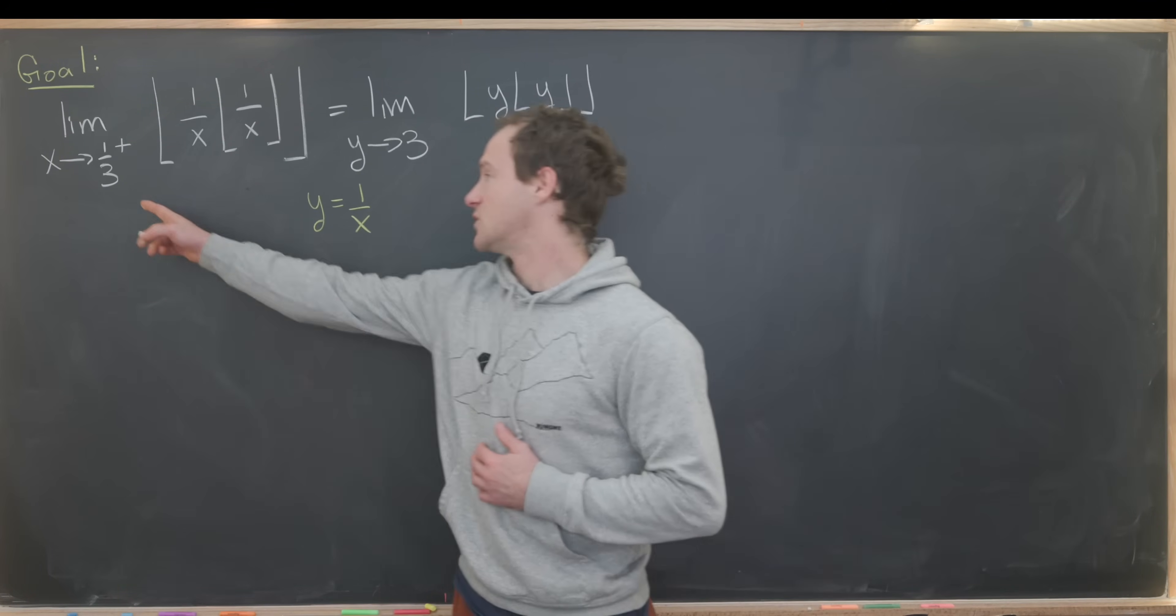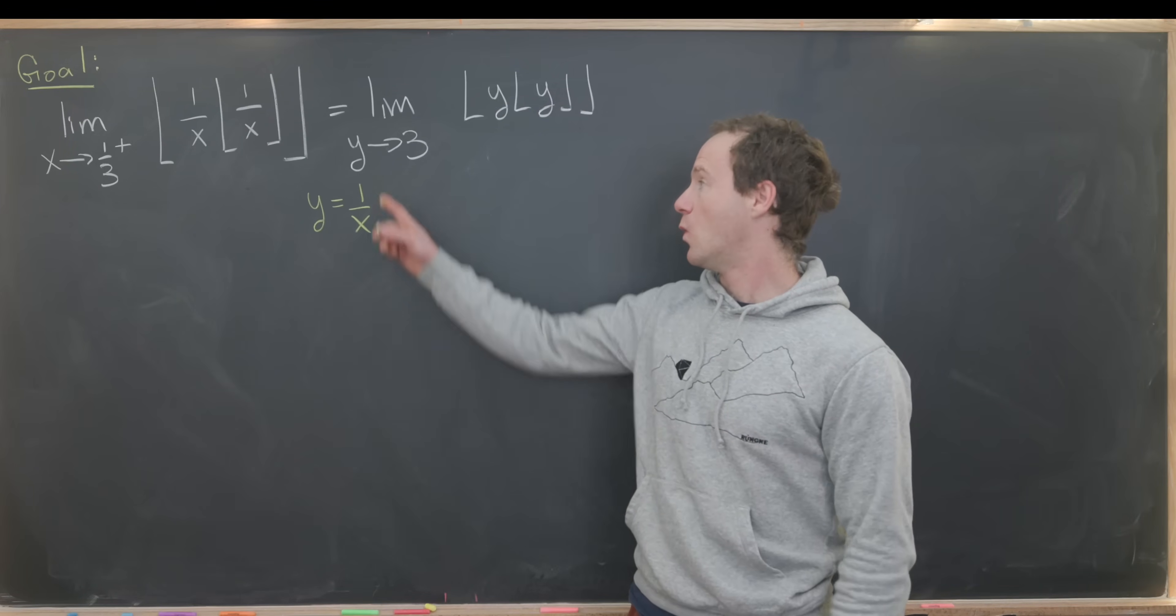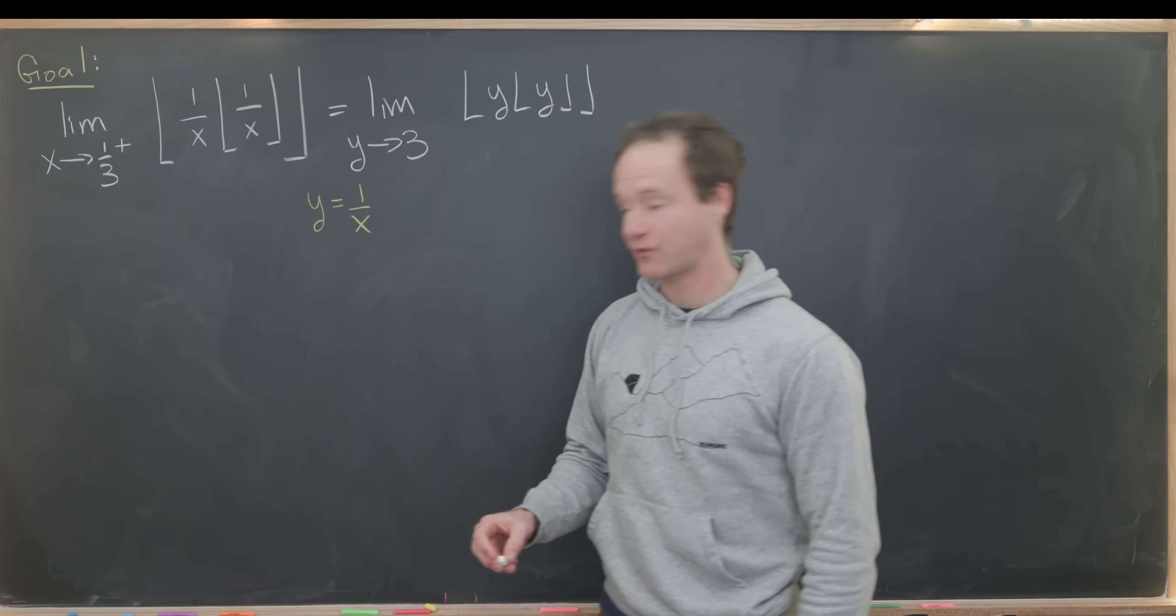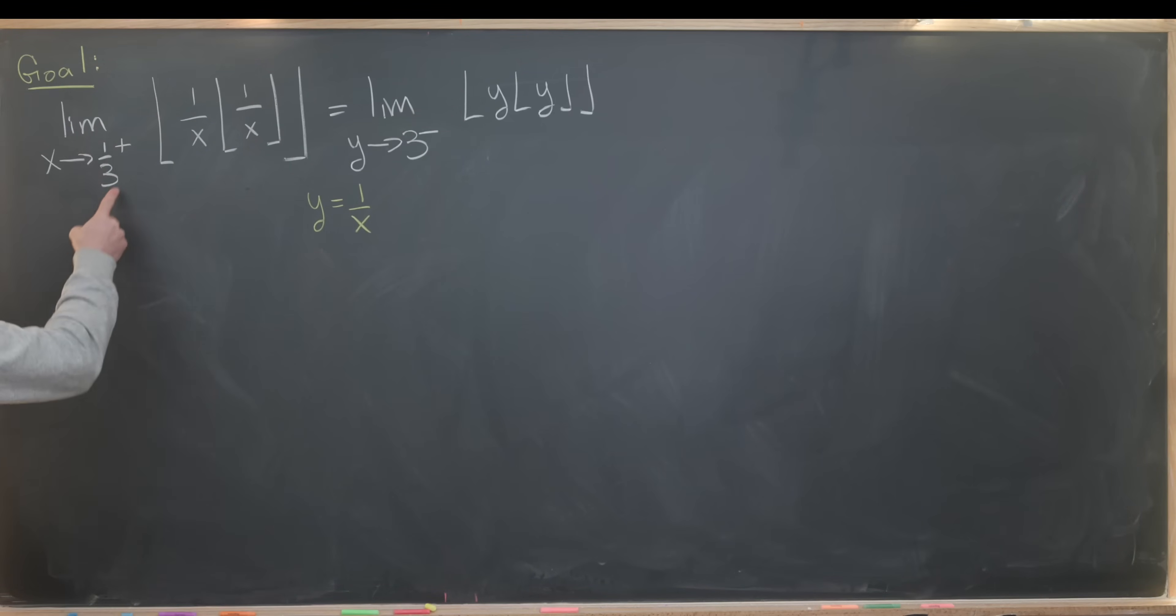Now let's look at this. As x approaches one-third from above, y will approach three from below. Let's think about numbers that are larger than one-third. Like one-half would be larger than one-third. If x is equal to one-half, then y is equal to two, which is less than three.